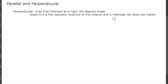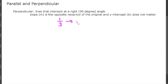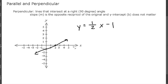Remember from a previous video, a reciprocal is found by switching the numerator and denominator. So if you have one-third, the reciprocal would be 3 over 1. If you have 2/4, switching those would be 4 over 2. But here we're looking at the opposite reciprocal, so if you have 1/3 it becomes negative 3 over 1, and if you have 2/4 it becomes negative 4 over 2. The y-intercept does not matter.